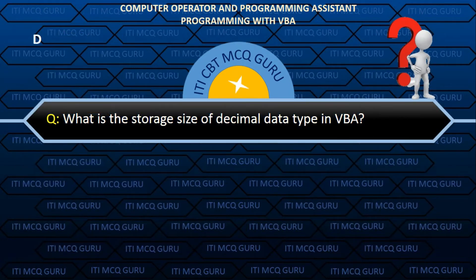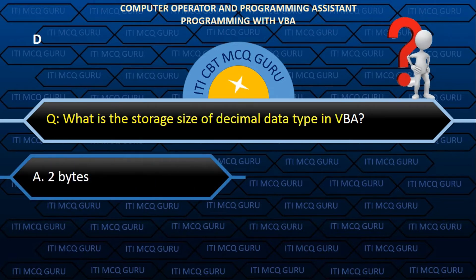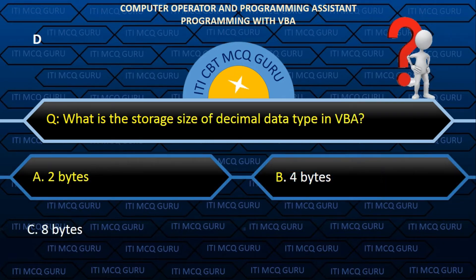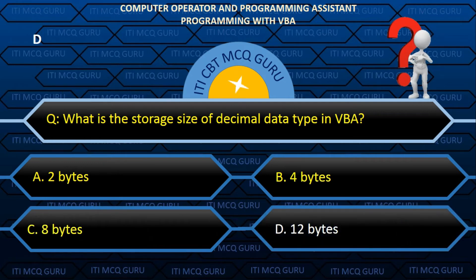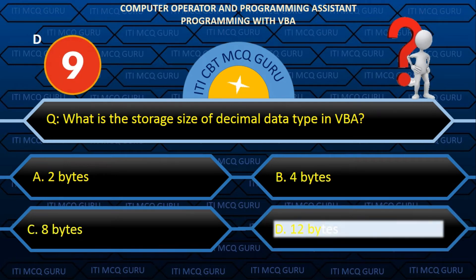What is the storage size of the decimal data type in VBA? Answer: D. 12 bytes.